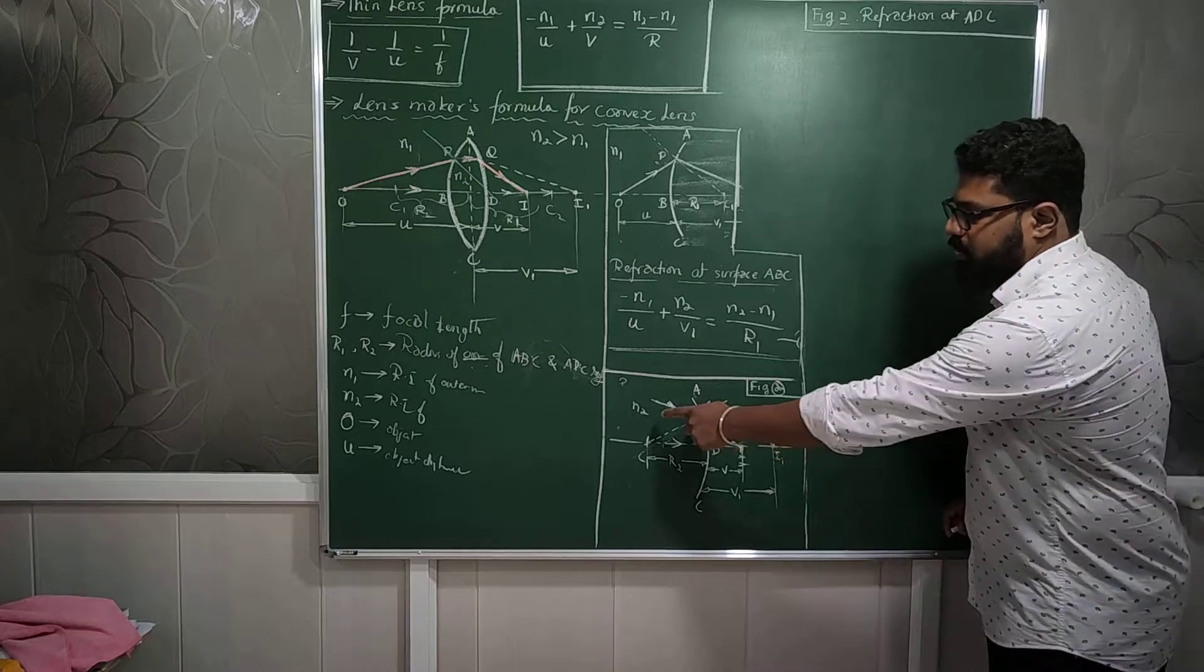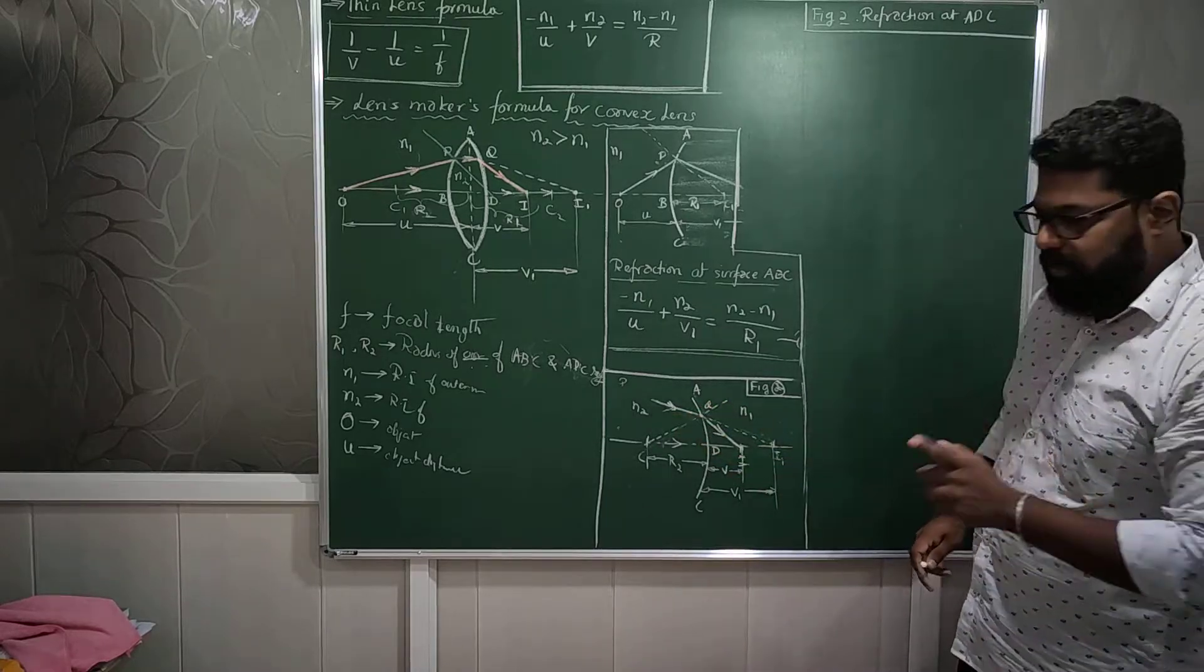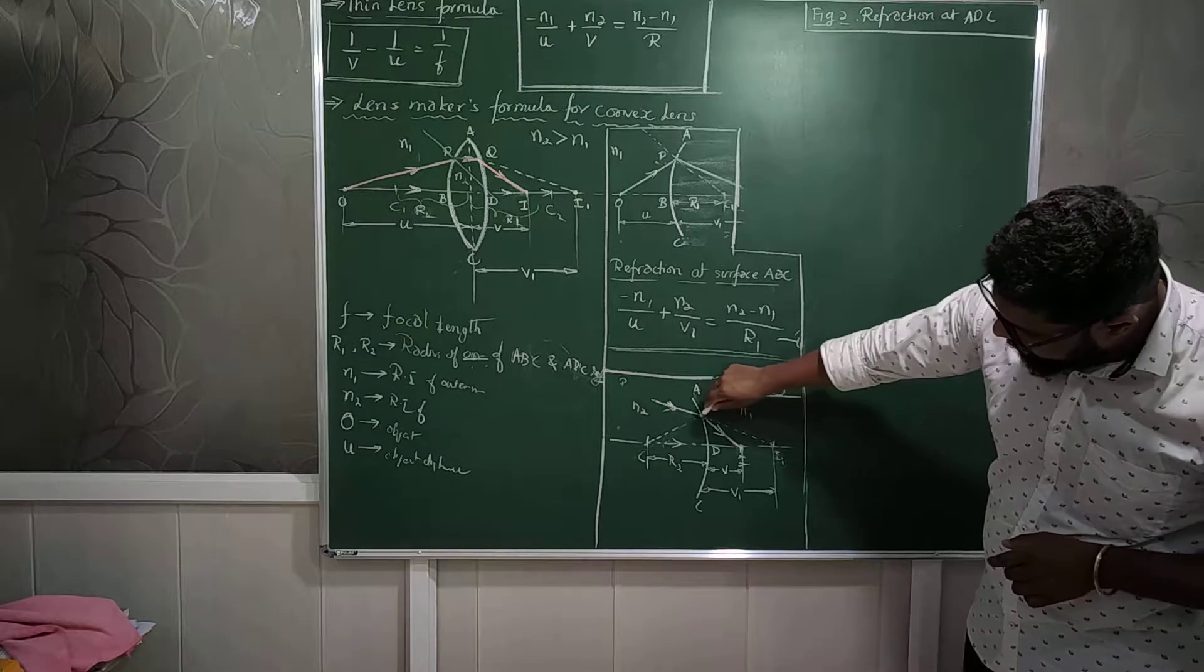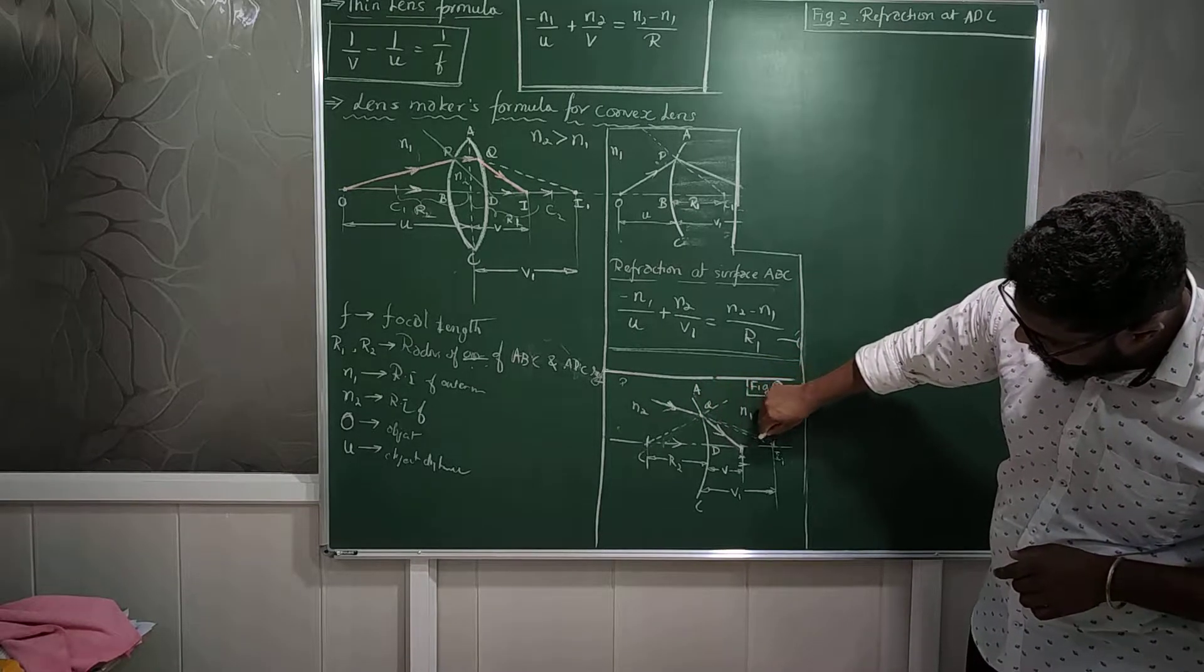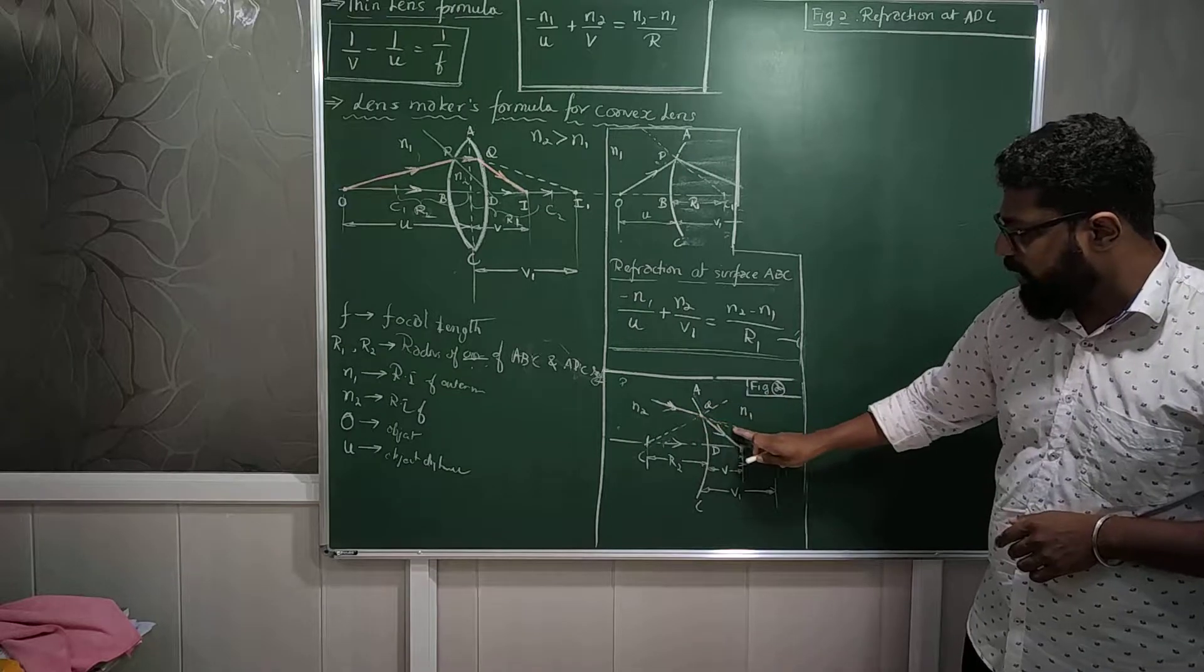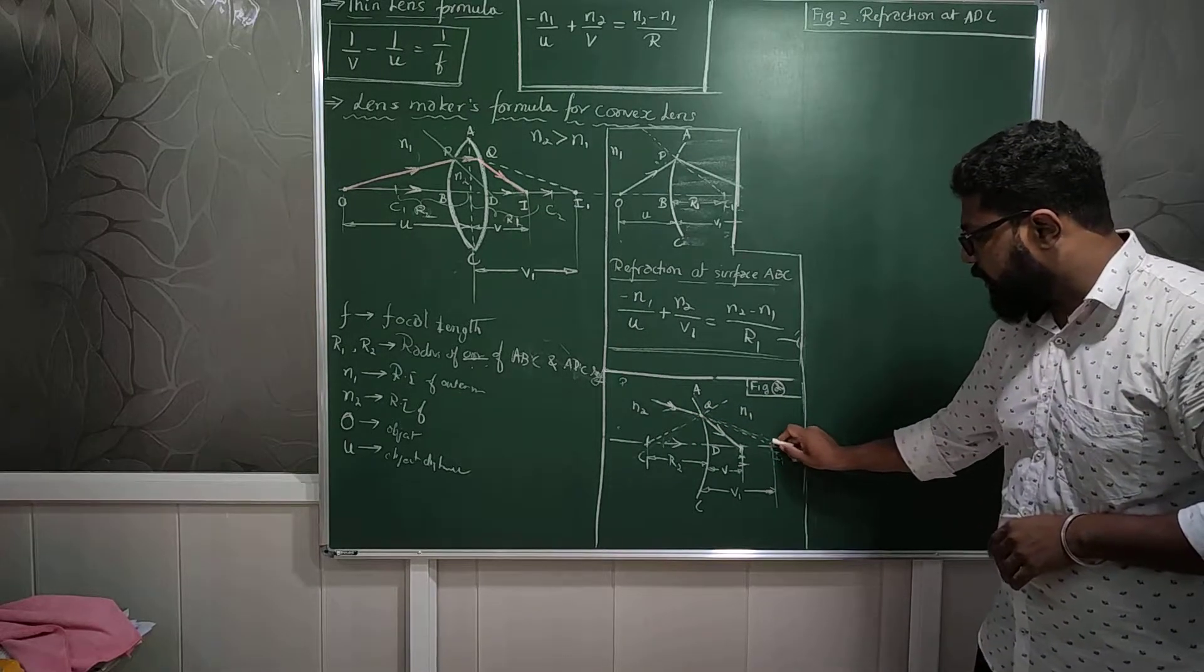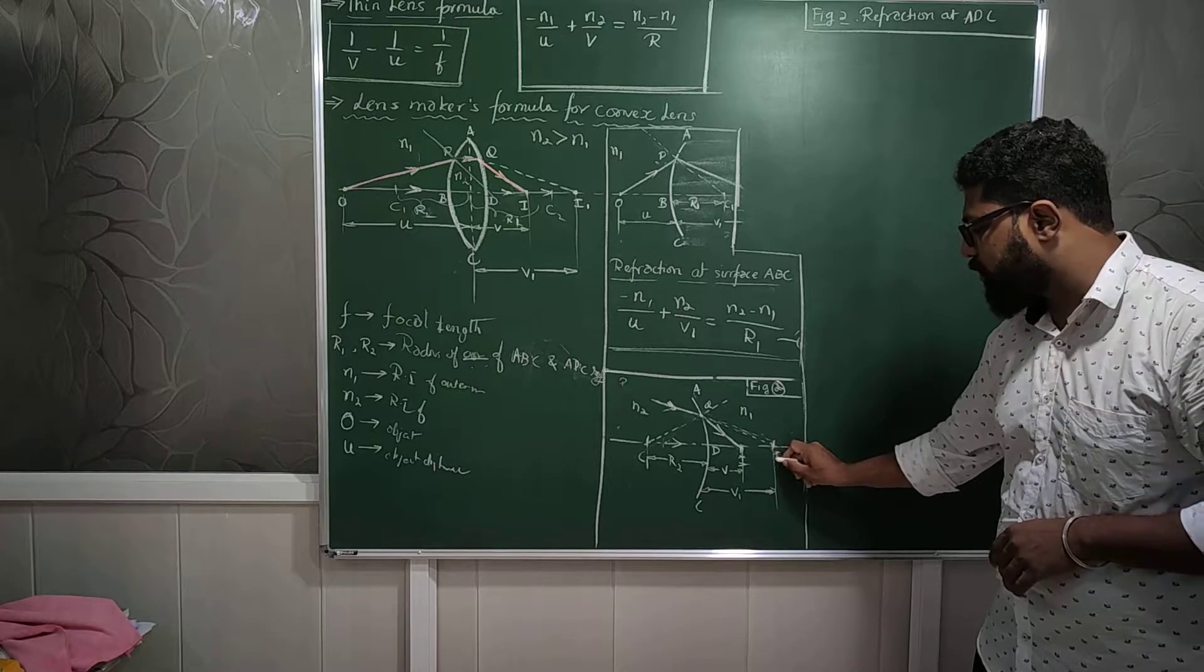Now, we don't know the source from where it is coming from. So what I am going to do here is, I will extend this such that it does not undergo any refraction. I will extend the same light ray in such a way that it falls on the principal axis.